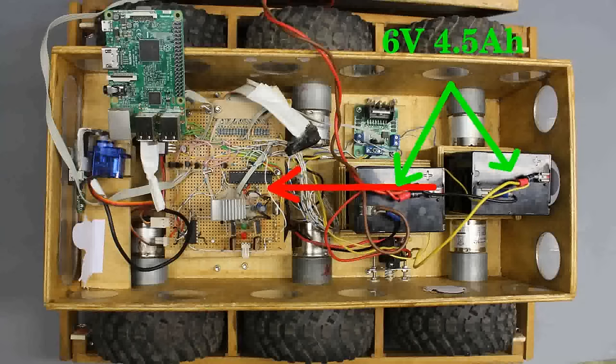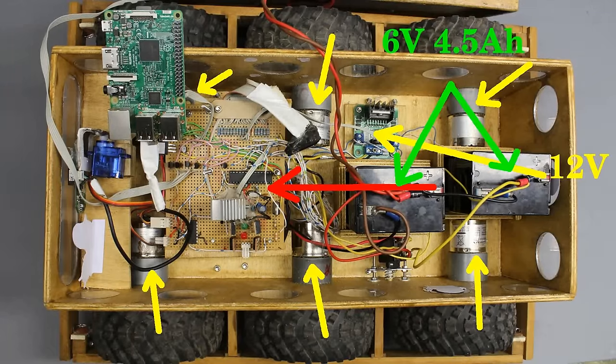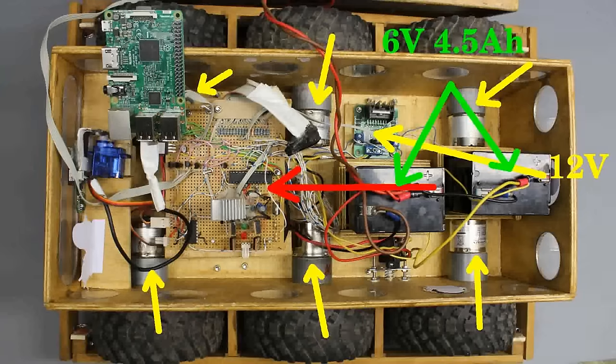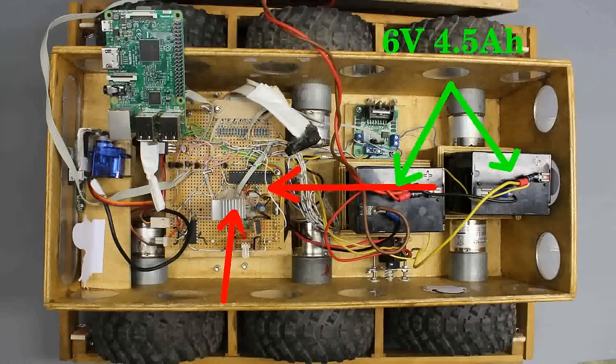The electronics draws its current from only one battery while the second battery is needed to provide 12V for the drive motors. A linear regulator with a heatsink steps the 6V of the battery down to 5V needed for the computers.